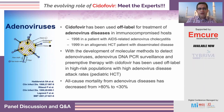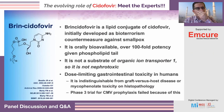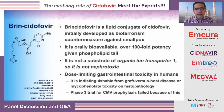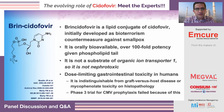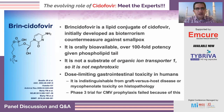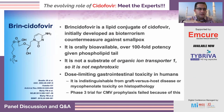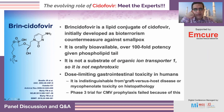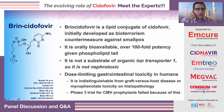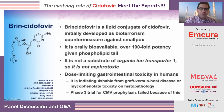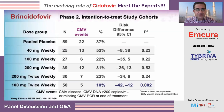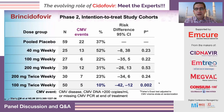Brincidofovir has an important story regarding cidofovir use for BK virus. Brincidofovir was developed as a lipid conjugate of cidofovir. The phospholipid allowed better transfer to the intracellular space, making it much more potent than cidofovir. Because of the lipid tail, it is not an organic ion transporter 1 substrate and therefore not nephrotoxic. However, limiting GI toxicity led to failure in the phase three trial. Phase two data showed 100 milligrams twice weekly improved CMV viremia significantly compared with placebo.